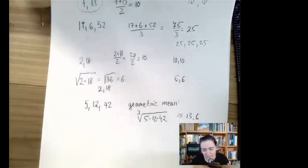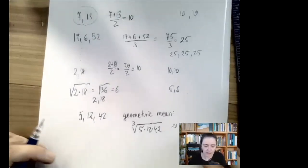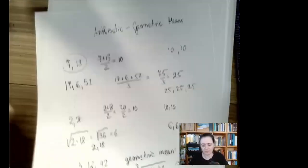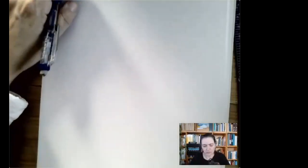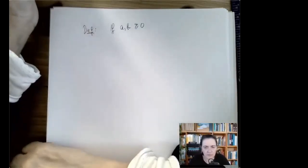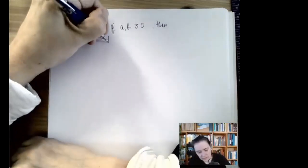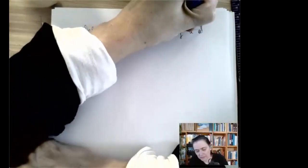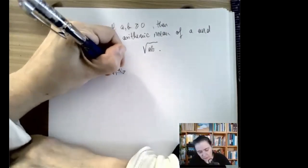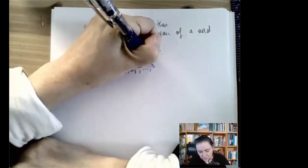For four numbers you multiply them and take the fourth root — evening out the data with respect to multiplication. One important complication: we cannot take the square root or fourth root of negative numbers. So we agree that the geometric mean is always defined for non-negative numbers only. Negative numbers cannot be used. The definition is: if a and b are non-negative, the arithmetic mean of a and b is (a + b)/2.